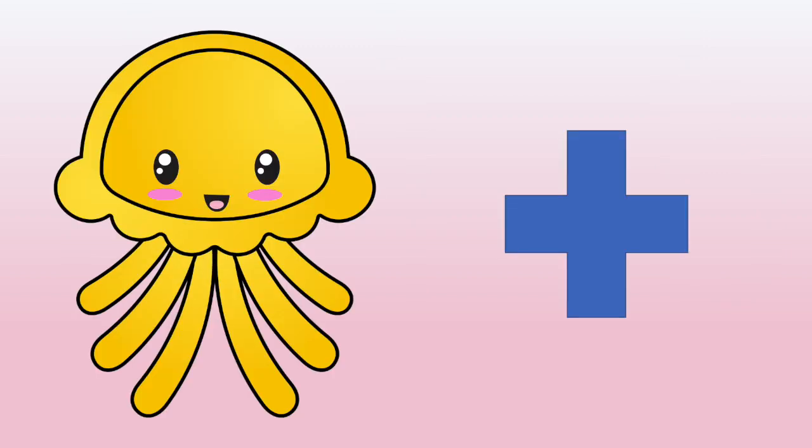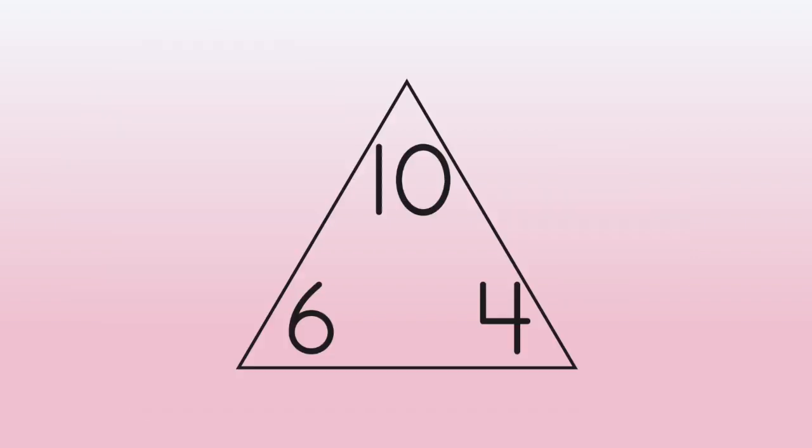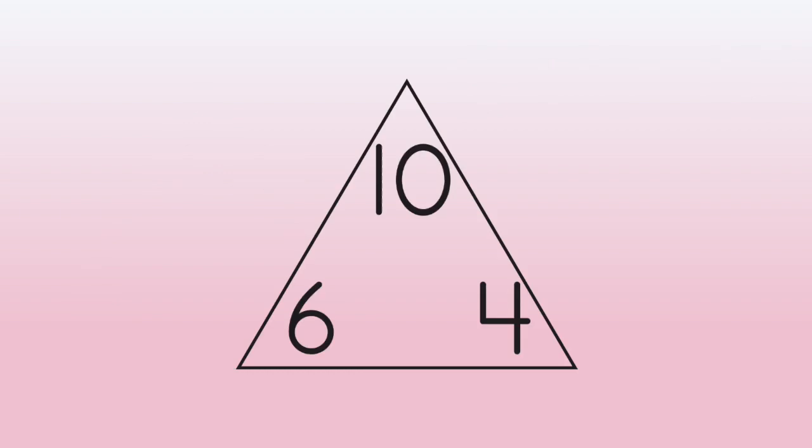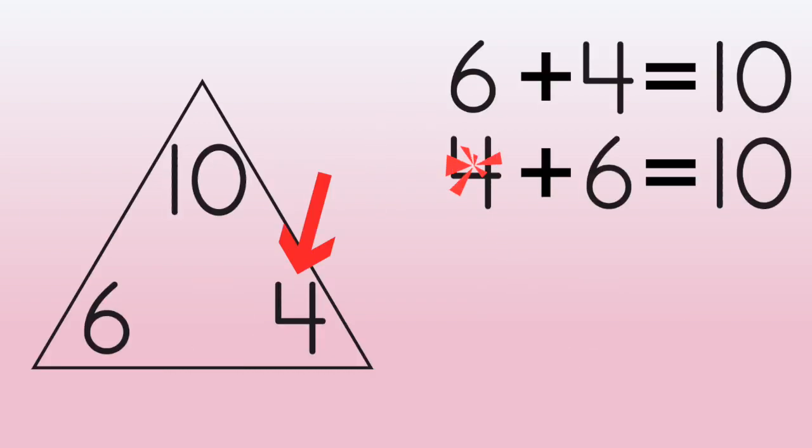She decided to do addition first. Start at the bottom, go over and up. 6 plus 4 equals 10. She started at the other side and did the same thing. 4 plus 6 equals 10.